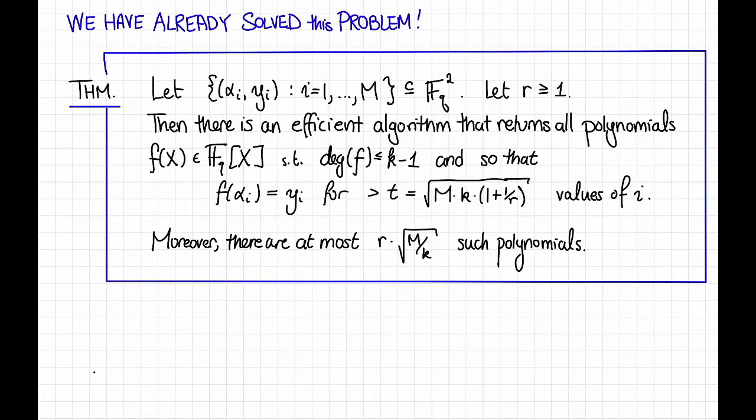The answer is the Guruswami-Sudan algorithm. In particular, in a previous video, we proved this theorem. Suppose we have a bunch of points alpha i comma y i for i between 1 and capital M, and fix a parameter r that's greater than or equal to 1. Then there is an efficient algorithm, the Guruswami-Sudan algorithm, that returns all polynomials f of x over Fq, so that the degree of f is at most k minus 1, and so that f of alpha i is equal to y i for lots of different i's. And if you look back to that video, lots of different i's meant this many i's. The square root of m times k times 1 plus 1 over r. Moreover, we showed that there were not so many such polynomials, at most r times the square root of m over k.